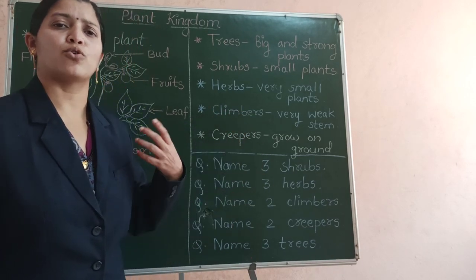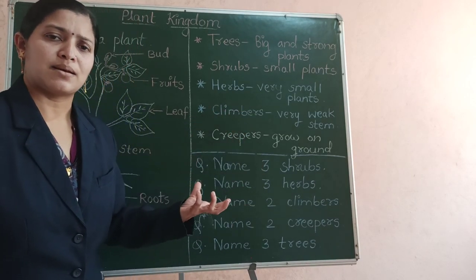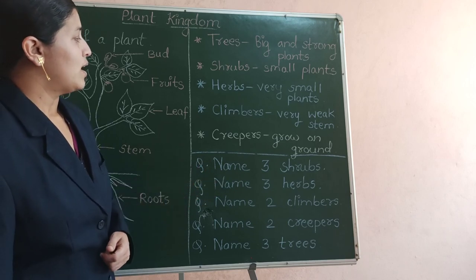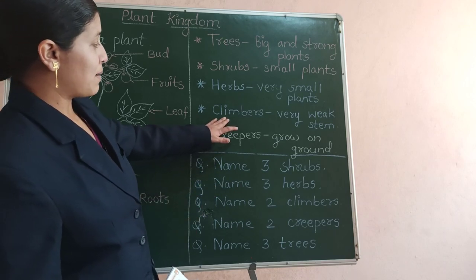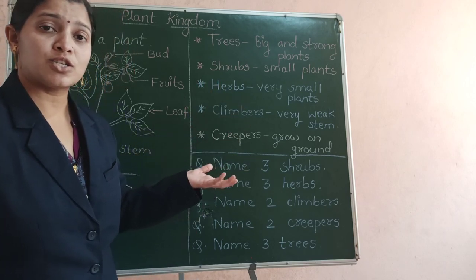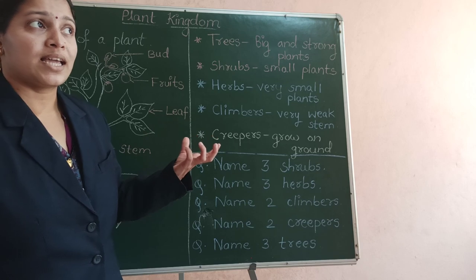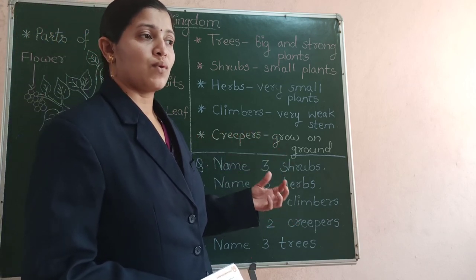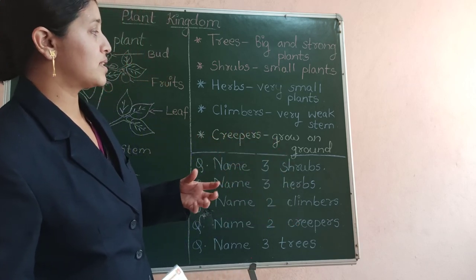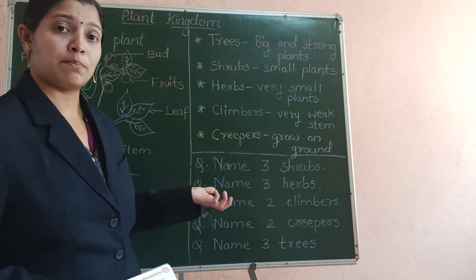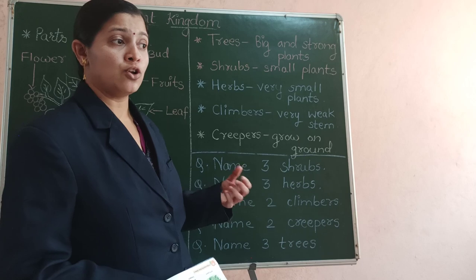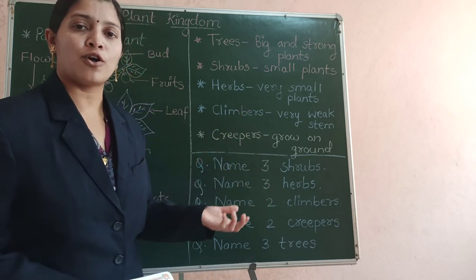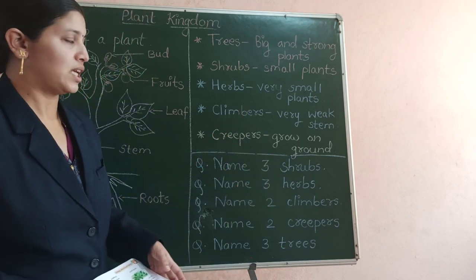They take the support of something and they grow. Some climbers can live for a few months, while some climbers like grapevine or money plant can live for a few years.